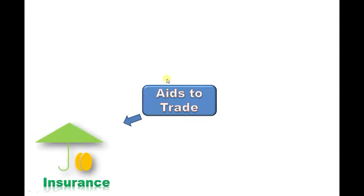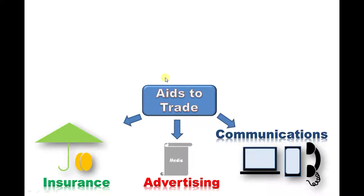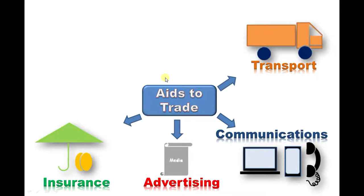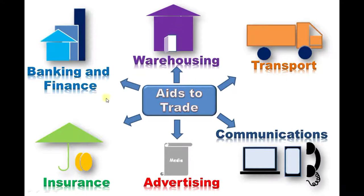As aids to trade, we have: insurance, which goes against business risks; advertising, to promote goods; communications, which happens between consumers and suppliers; and we also have transport, warehousing, and finance.